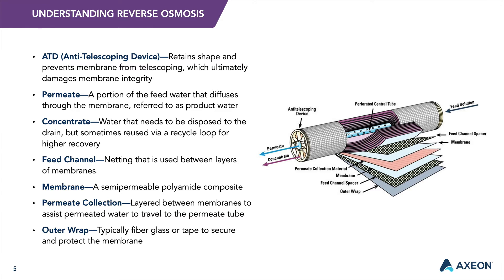In membrane systems, the elements are placed in series inside of a pressure vessel. The concentrate of the first element becomes the feed to the second element, and so on. The permeate tubes are connected with inner connectors, also called couplers, and the combined total permeate exits the pressure vessel at one side and sometimes at both sides of the vessel.